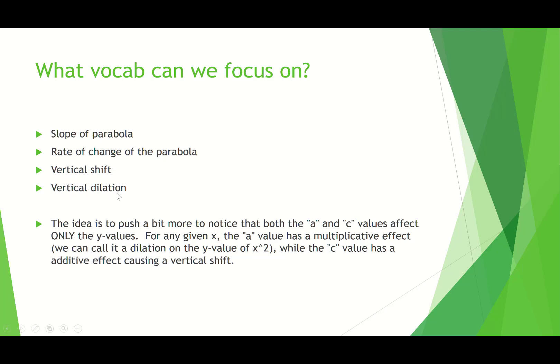And when you change a, it's a vertical dilation. So, the idea is to push a bit more to notice that both a and c values affect only the y-values, but all of the y-values. For any given x, the a-value has a multiplicative effect, okay? That is what we call this vertical dilation. We call it a dilation on the y-value of x-squared, while the c-value has an additive effect causing the vertical shift. Now, I don't want you to hear this and say, oh, she was shopping for those words, or that's what I was supposed to say. That's not the case at all. What I'm showing you is that we can build on students' thinking to say, okay, start here. What were you thinking? How can we push you a little bit more in this direction? I certainly wasn't saying it's wrong if you didn't use these words. I'm saying that it makes a lot of sense, and this is a good way for technology to be a tool to support students' development of more language.